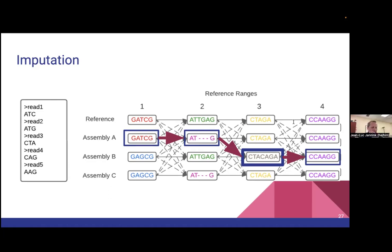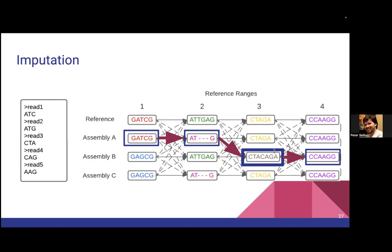Brenda asked: can long read sequencing data be used, or just short reads? For imputation right now we're only using short reads. That said, there's nothing stopping us from opening that up so that we hit consecutive reference ranges — we could potentially use a long read to help impute the path a little bit easier. So the answer is not yet, but we've definitely thought about it a little bit; we just haven't gotten to integrating it.